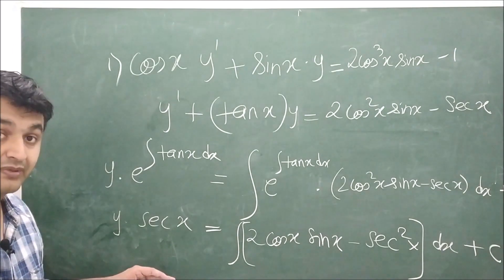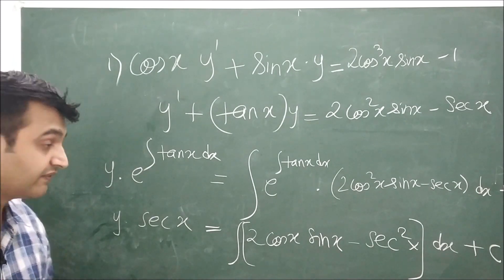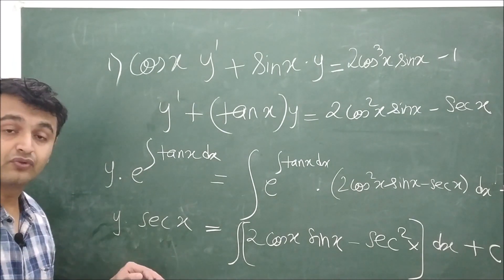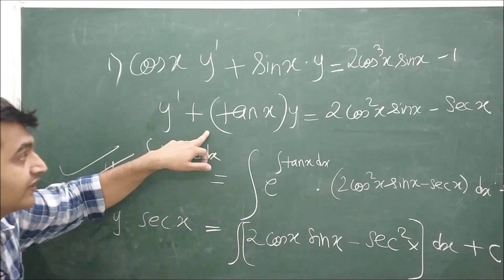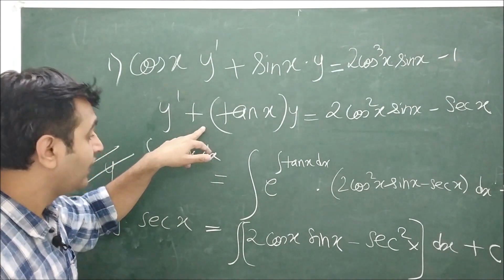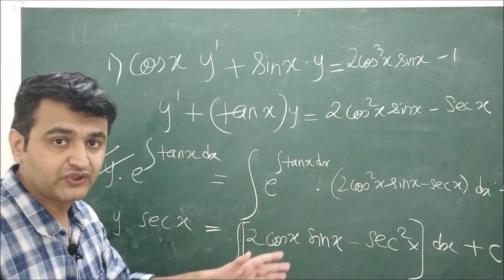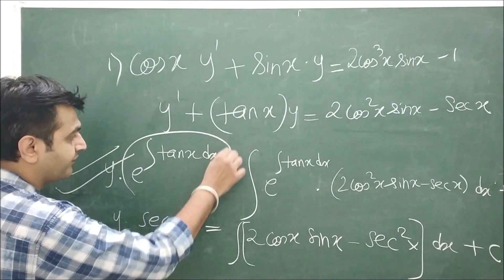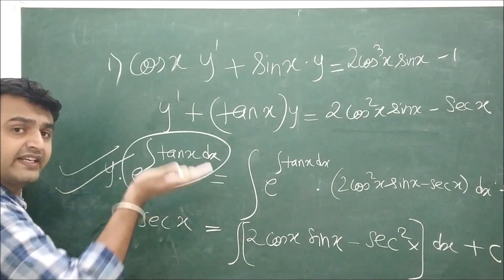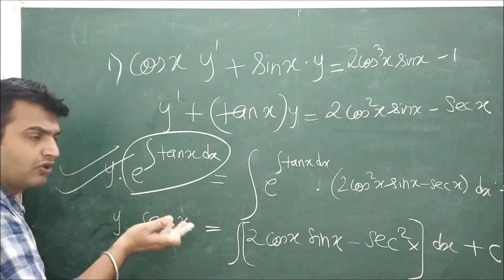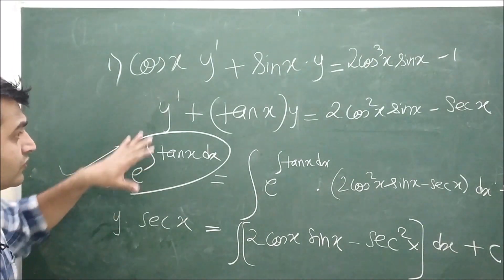Finally, dividing through by sec x gives the explicit solution y. Make sure you complete the final step and post your answer in the comments so others can verify. To summarize the method: rewrite in standard form, identify P and Q, use the formula directly, or find the integrating factor e^(integral P dx) first and then plug in.